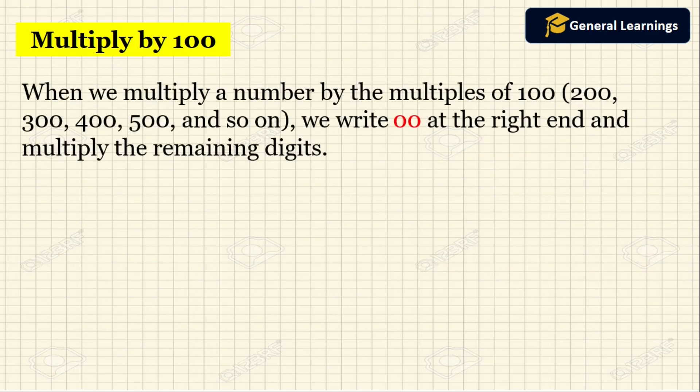Now we are seeing when we multiply a number by the multiples of 100, that is 200, 300, 400, 500 and so on. We write two zeros at the right end and multiply the remaining digit.